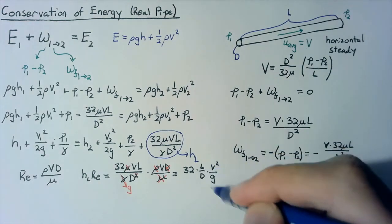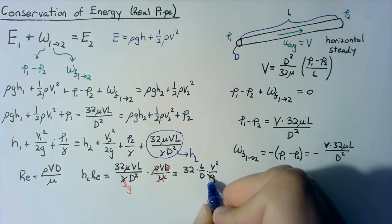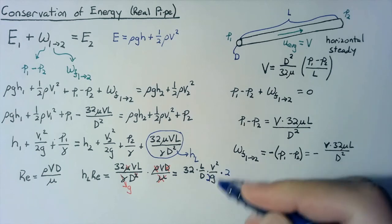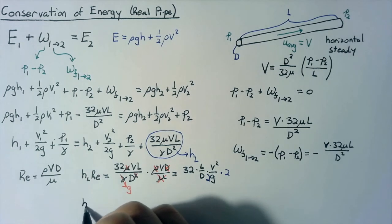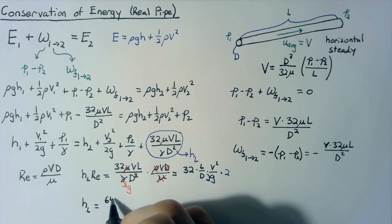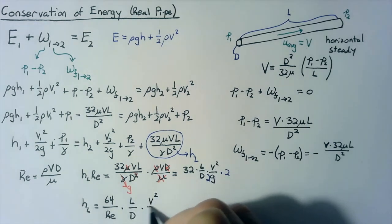Now, this right here is very close to our kinetic energy. So if we just put a 2 underneath and multiply it by another 2, we actually have exactly our kinetic energy that we had before. And then we can rewrite the head loss equation dividing through by the Reynolds number. So head loss here is equal to 32 times 2, which is 64 divided by the Reynolds number multiplied by L over D multiplied by the kinetic energy.